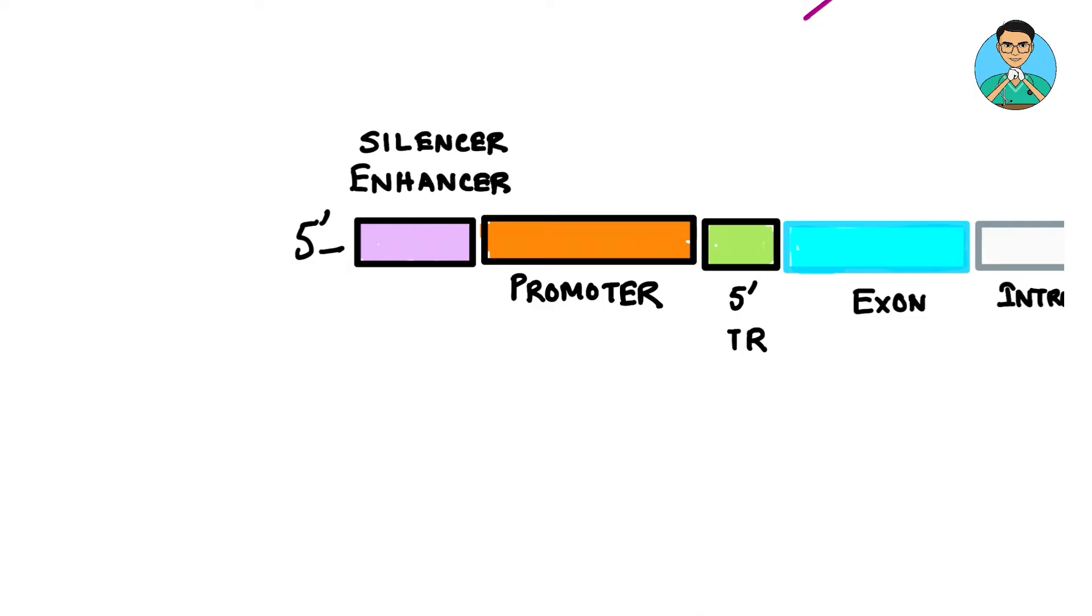It regulates the gene expression. Silencer decreases the expression. Enhancer increases the expression. So basically silencer decreases gene expression and enhancer increases gene expression.